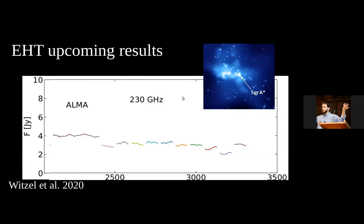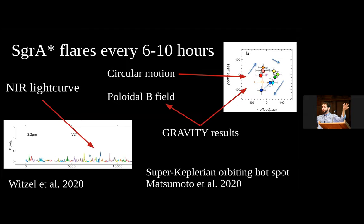Ahead of the upcoming Sgr A* EHT results, a light curve from ALMA at 230 GHz shows relatively stable flux with not much variability. However, Sgr A* flares every few hours, seen in the near-infrared light curve at 2.2 microns. At the time of a bright flare, GRAVITY detected circular motion close to the event horizon. Analysis of this motion showed that a poloidal B-field is needed to explain polarization, and the best-fit orbiting hotspot showed super-Keplerian motion.